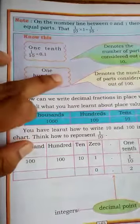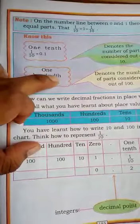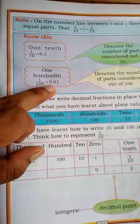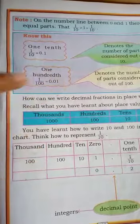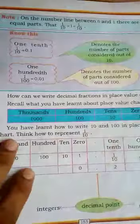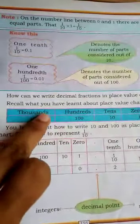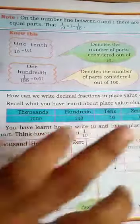Now 1 hundredth, 1 by 100 can be read as 1 hundredth and its decimal form is 0.01. Now for a given number we know how to draw the place value chart like this: 1000, 100, 10 and 1.